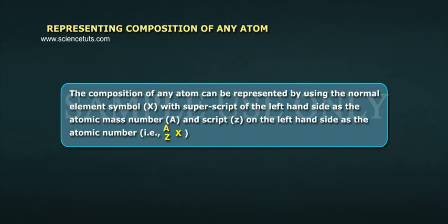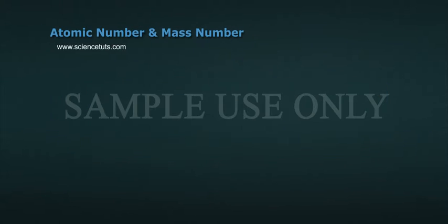Isobars and isotopes. The composition of any atom can be represented by using the normal element symbol X with superscript of the left-hand side as the atomic mass number A and script Z of the left-hand side as the atomic number.